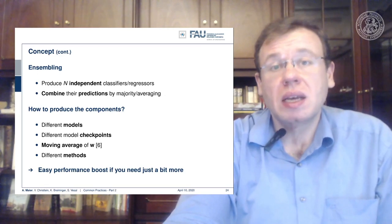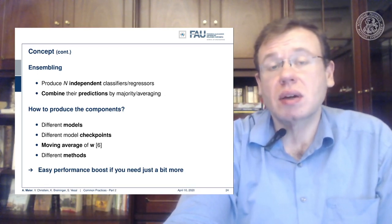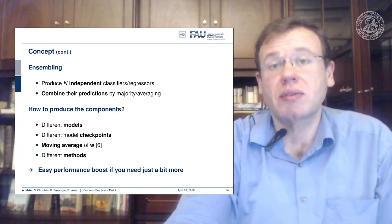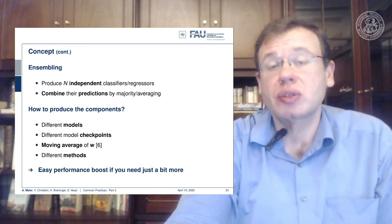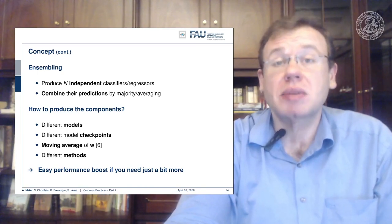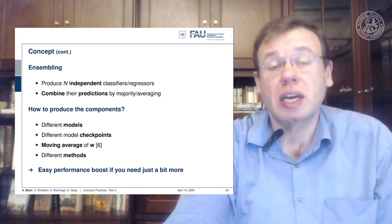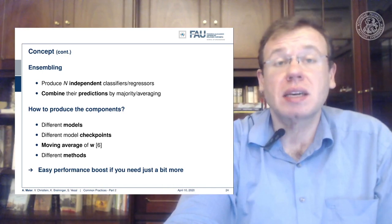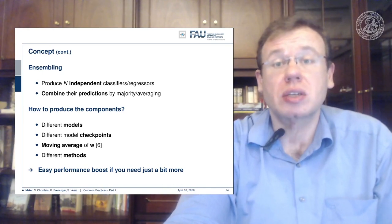Ensembling, by the way, was also the idea that finally helped people break the Netflix challenge. The first two teams that almost broke the Netflix challenge teamed up, trained an ensemble, and this way they broke the challenge together.